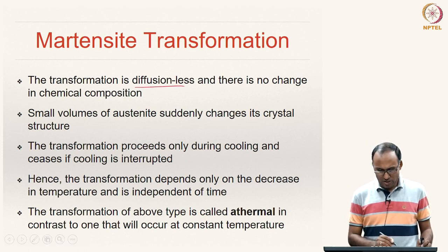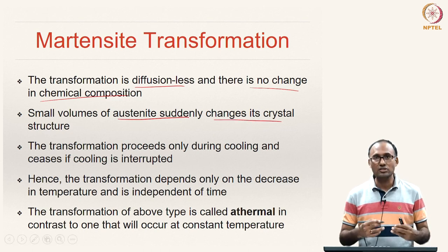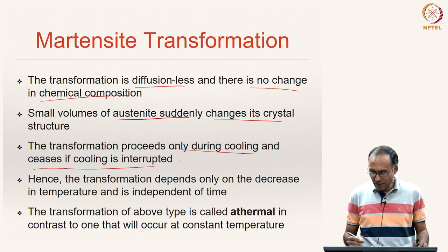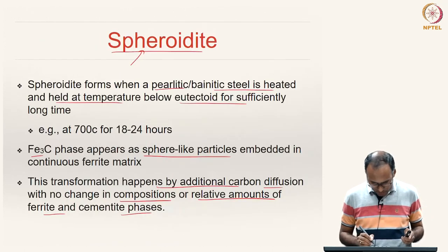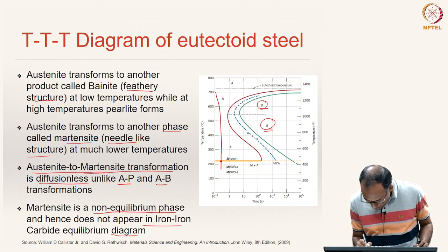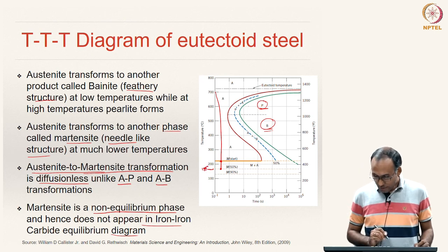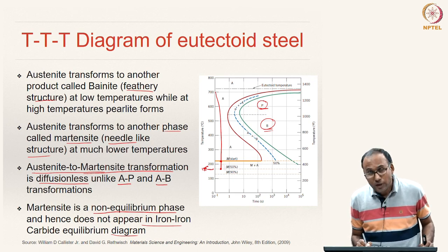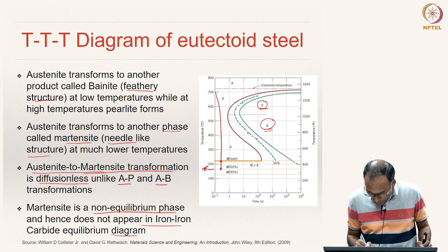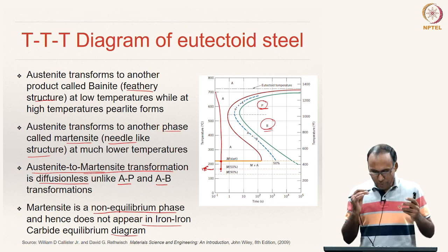The martensite transformation is diffusionless with no change in chemical composition — small volumes of austenite suddenly change crystal structure due to rapid cooling. The transformation proceeds only during cooling and ceases if cooling is interrupted. If you hold at say 175°C, even waiting for a long time, the remaining austenite does not transform further to martensite — it remains at 50% martensite and 50% austenite. Only with further reduction in temperature does further transformation occur. The transformation depends only on temperature decrease, not on time.